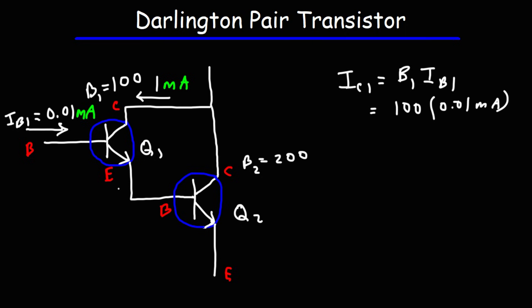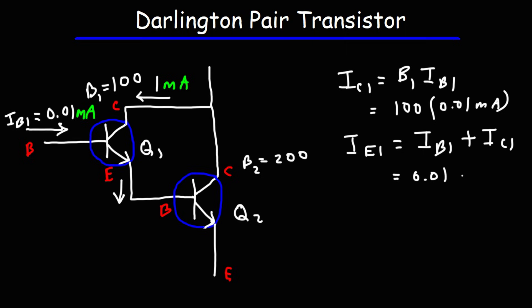Now, what is the emitter current leaving Q1? The emitter current is going to be the sum of the base current and the collector current. So IB1 is 0.01 milliamps, IC1 is 1 milliamp, so IE1 is going to be 1.01 milliamps.